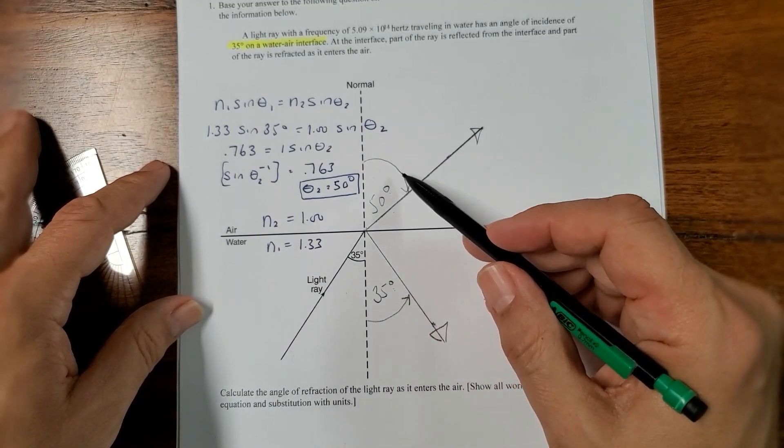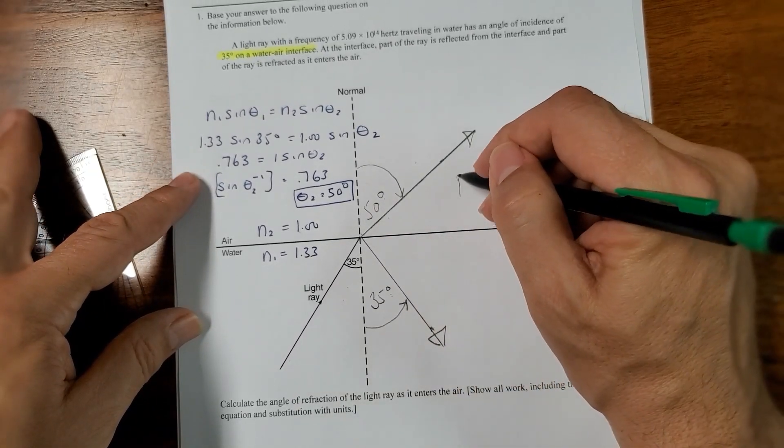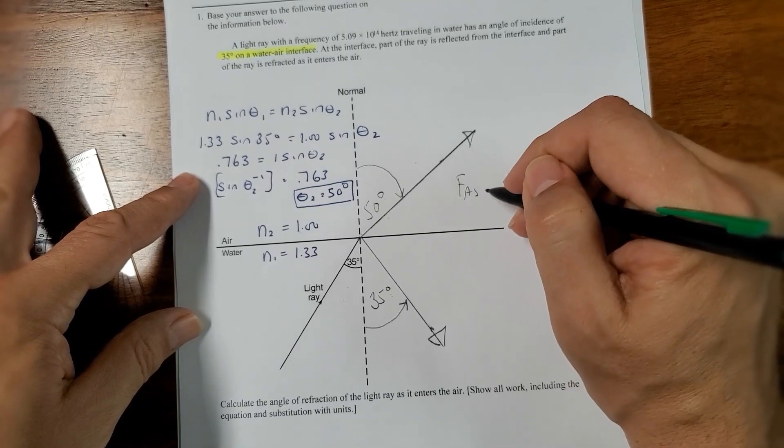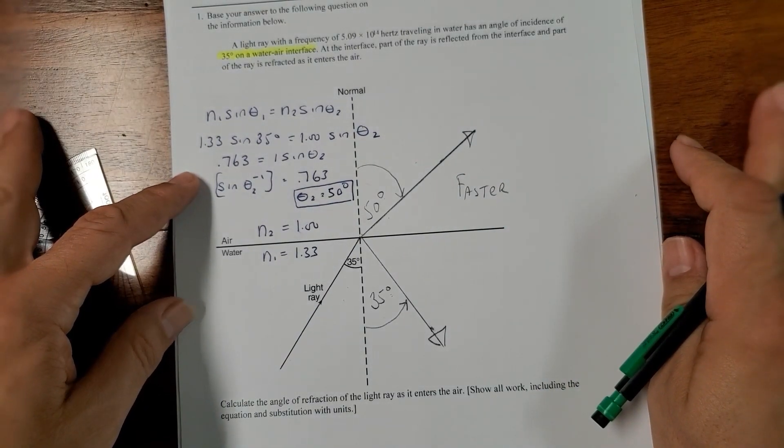Now you can see the angle of refraction is greater than the angle of incidence. So this is the faster medium. That's the faster medium. I think we've got everything here.